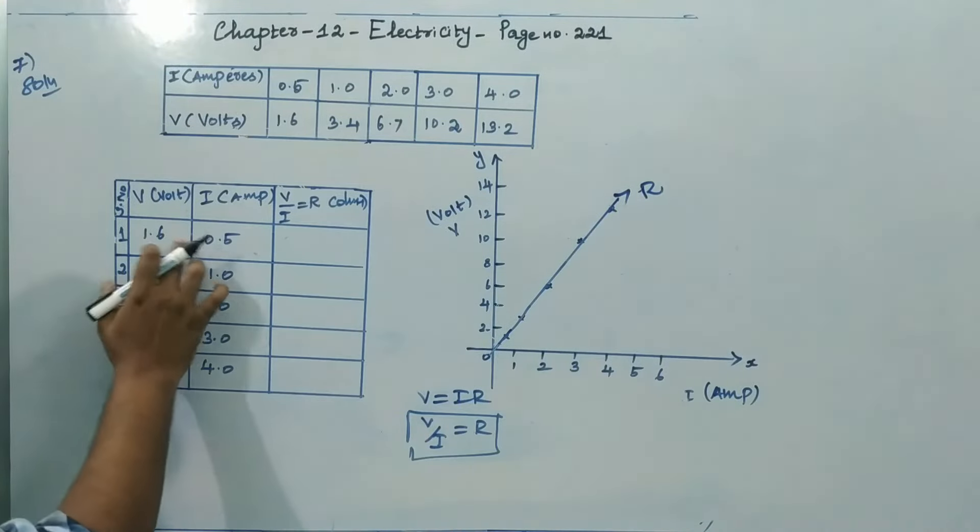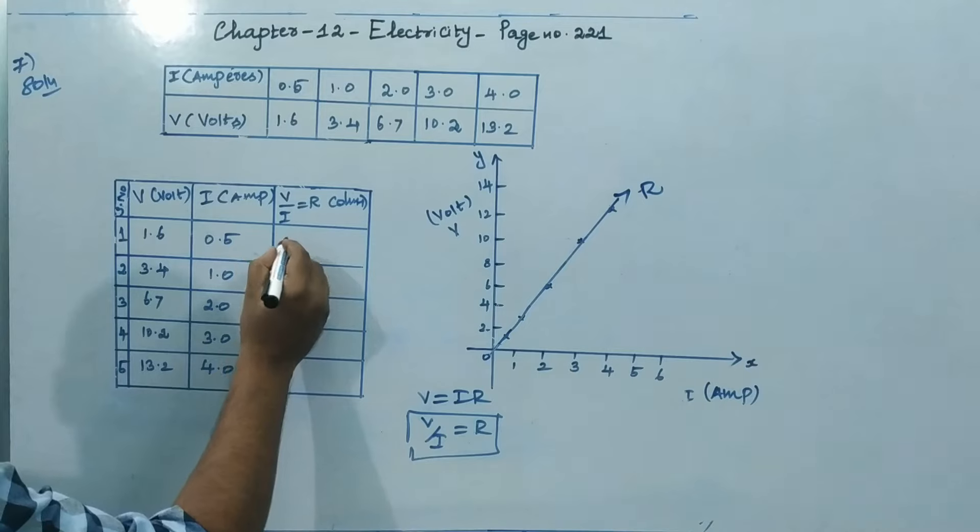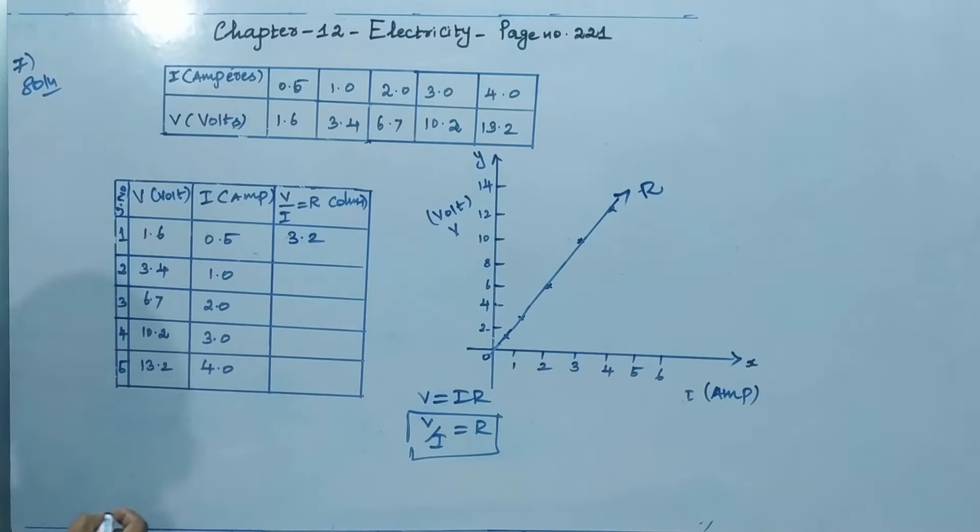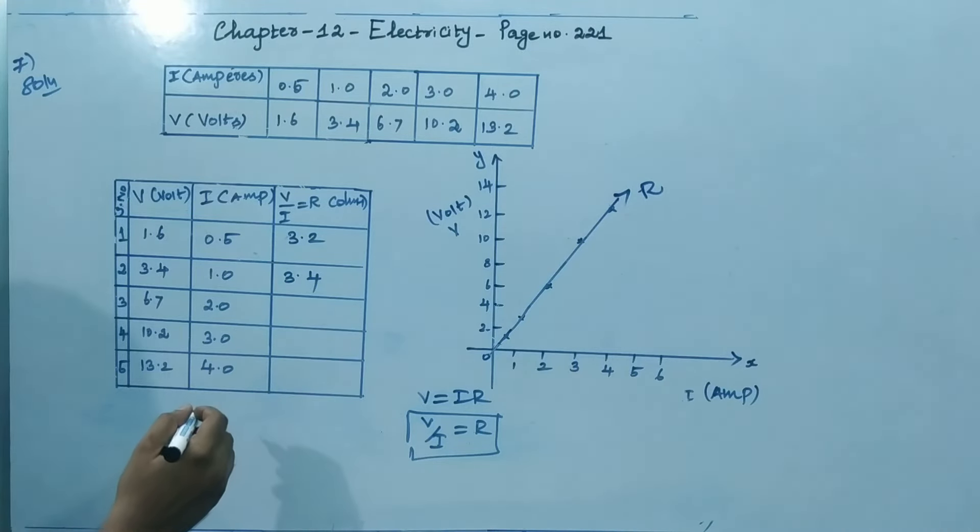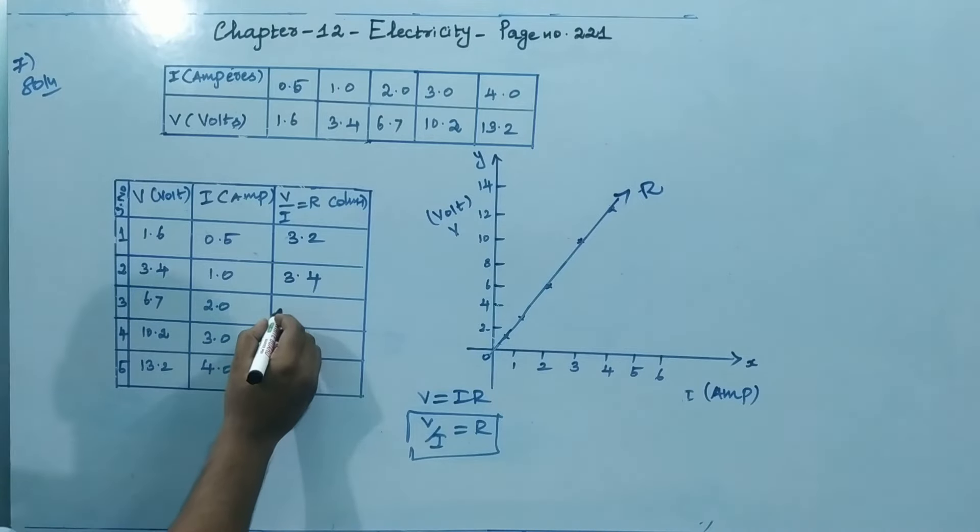So 1.6 and 0.5, the ratio is we'll get that 3.2 Ohm. Second one is 3.4 into 1, we'll get that 3.4. Then 6.7 divide by 2, then we'll get that 3.35.